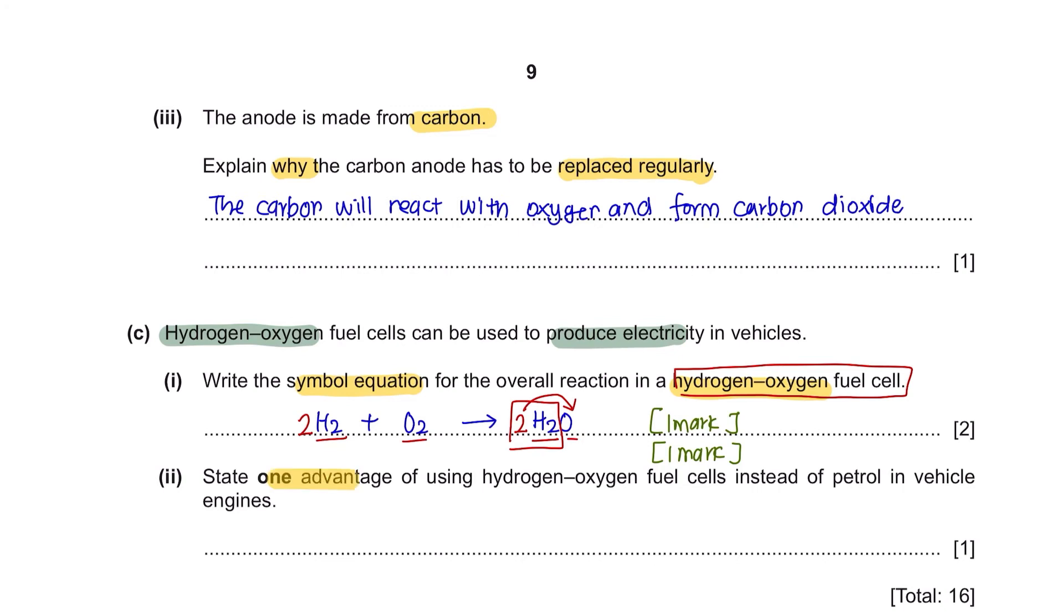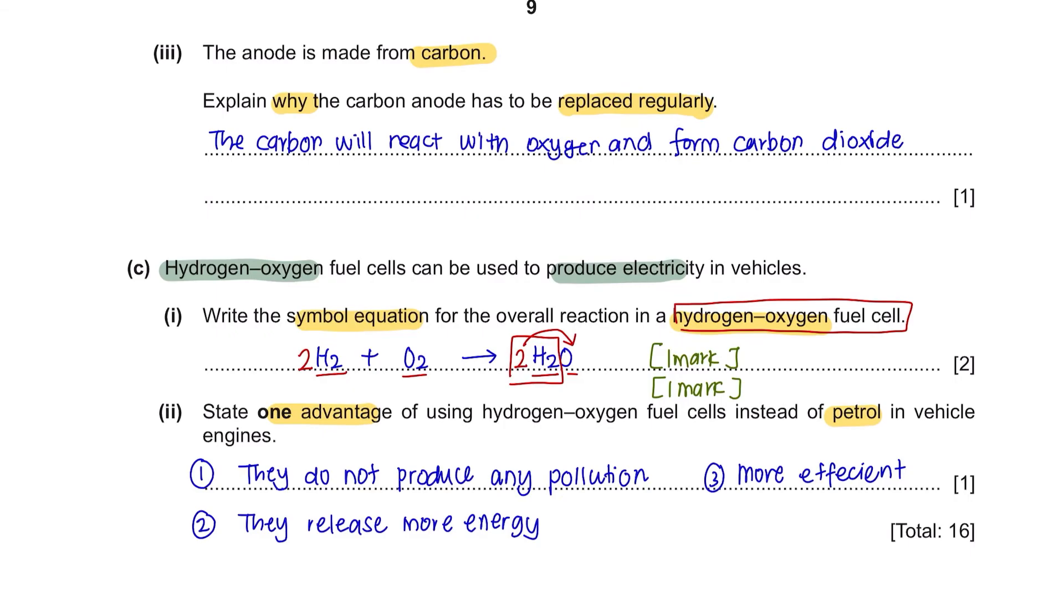Part 2. State one advantage of using hydrogen-oxygen fuel cells instead of petrol in vehicle engines. You can write any one of these three advantages.